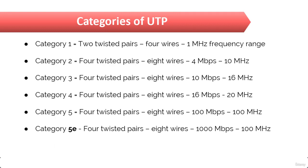So what is so special in CAT 5e? The 'e' stands for Enhanced, as in enhanced category of Category 5 twisted pair cable. Category 5e has four twisted wire pairs, which means eight wires in total, and is recommended for 1000BASE-T, that is 1000 Mbps per second, which is almost equivalent to 1 Gbps. Any category below 5e shouldn't be used in today's network environments.